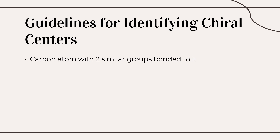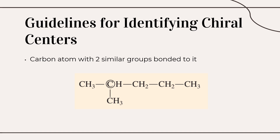Second, a carbon atom with two similar groups bonded to it is not a chiral center. In this example, the carbon is bonded to four groups of atoms, including hydrogen and another group. However, it also has two methyl groups, or two CH3 groups, which are similar groups. Therefore, this carbon is not a chiral center.